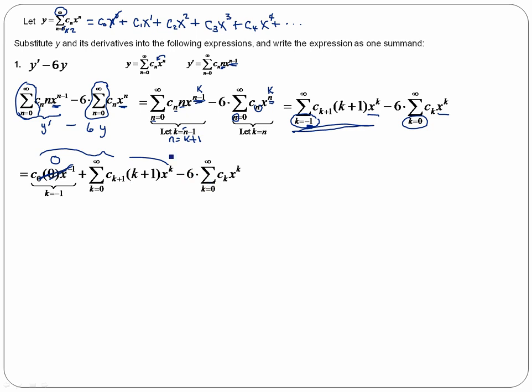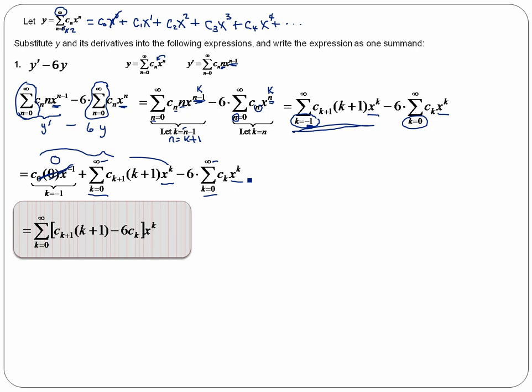So now with these two terms, I can combine my summations. I've got the same lower index, the same upper index, I have the same power of x. When I combine these into a single summation, notice that I've taken the single summation out. That's this part here. And then I've factored out my x to the k. That's this here. And the remaining terms are my c subscript k plus 1 times k plus 1, that's this, minus 6 ck, that's from my second term. And here I have this combined into a single summation. And here we go.